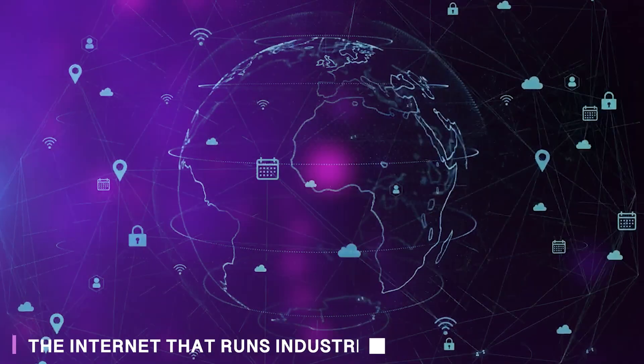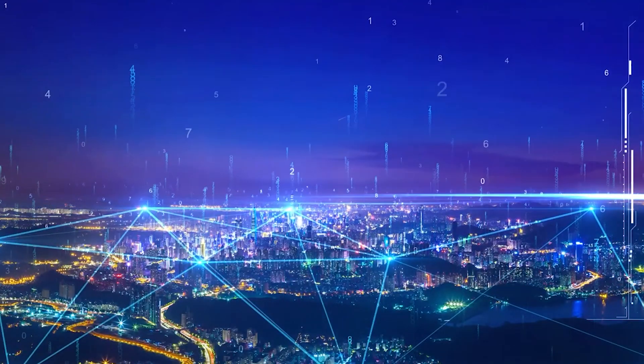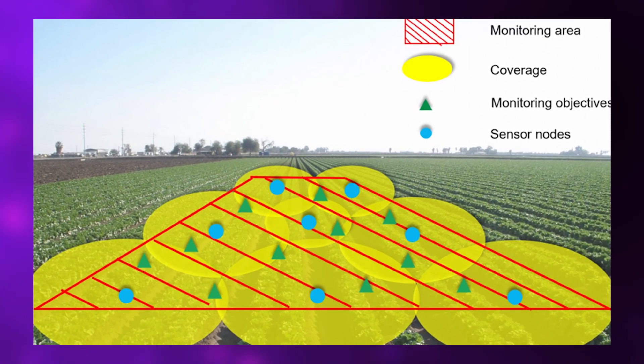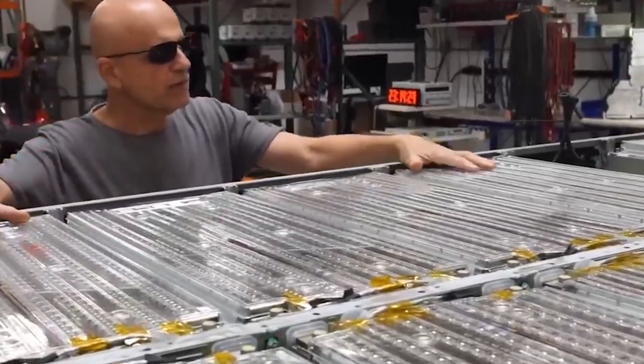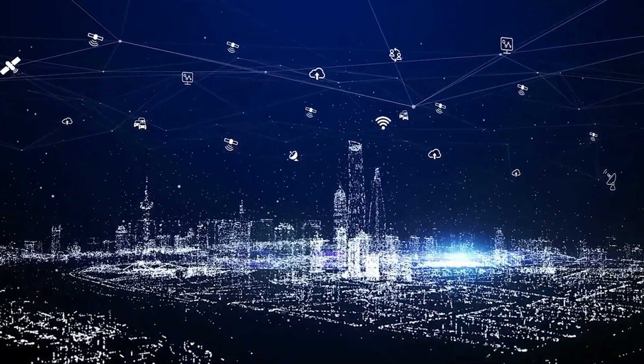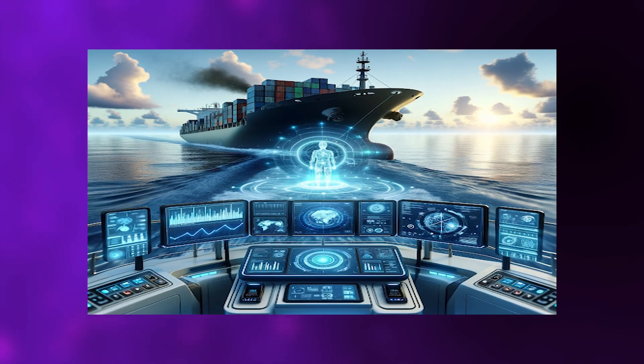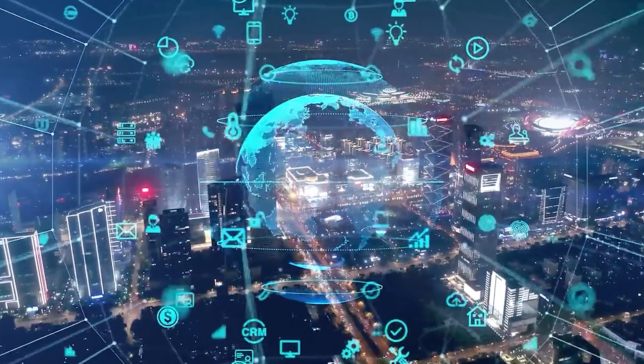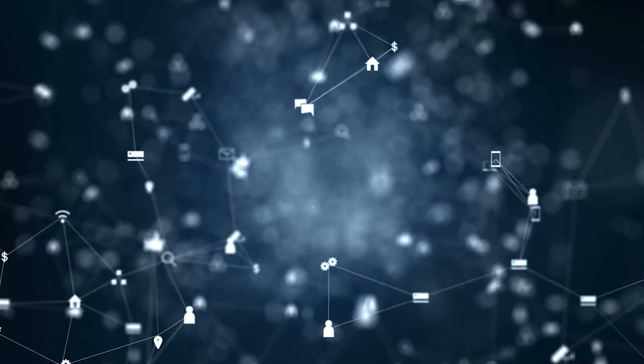The internet that runs industries. The internet of things evolved far beyond smart home gadgets. It's now running entire industries with startling efficiency. Farmers use distributed soil sensor networks to determine exactly when irrigation is needed, which simultaneously boosts crop yields while conserving enormous quantities of water in regions facing scarcity. Manufacturing facilities monitor thousands of machines in real time, using predictive algorithms to identify and fix potential problems before breakdowns occur, dramatically reducing costly downtime. Shipping companies track every single package down to the second, with systems that can instantly reroute shipments if disruptions emerge anywhere in the logistics chain. And in 2025, edge computing makes everything dramatically faster because data processing happens right where information is collected rather than traveling to distant data centers and back.